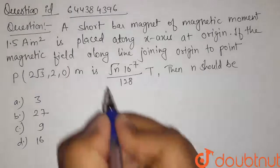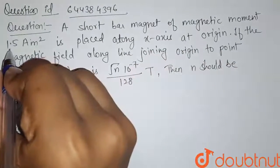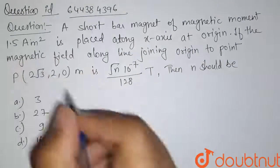Hello students, here is our question: a short bar magnet of magnetic moment 1.5 ampere meter square.